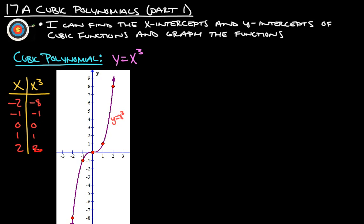So here are our points. There's negative 2, negative 8. Negative 1, negative 1. 0, 0. 1, 1. 2, 8. So that's what a cubic polynomial looks like.